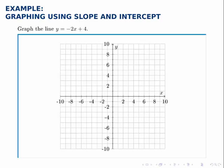Graph the line y equals negative 2x plus 4. There are several ways to graph a line, but all of them boil down to the principle that two points determine a line. In this example we're going to graph using the slope and intercept to illustrate how that process works.